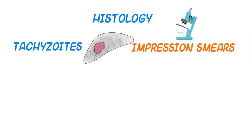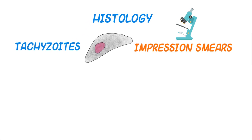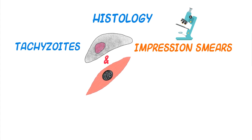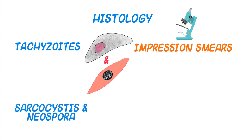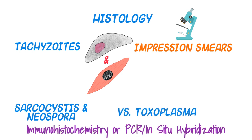To confirm toxo in an animal after death, tachyzoites may be shown with impression smears, and microscopic examination of tissue may reveal the presence of tachyzoites or bradyzoites. The biggest issue is differentiating Sarcocystis and Neospora species from Toxoplasma, but generally immunological and molecular genetic techniques are required to make this distinction.